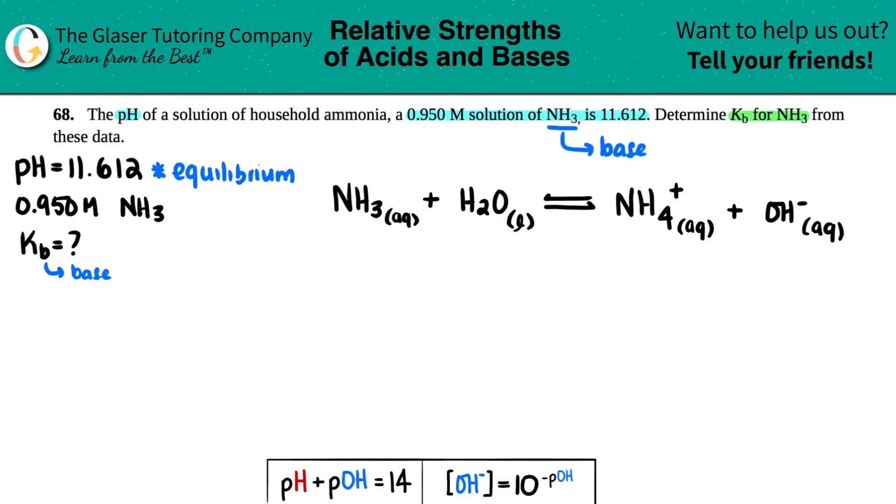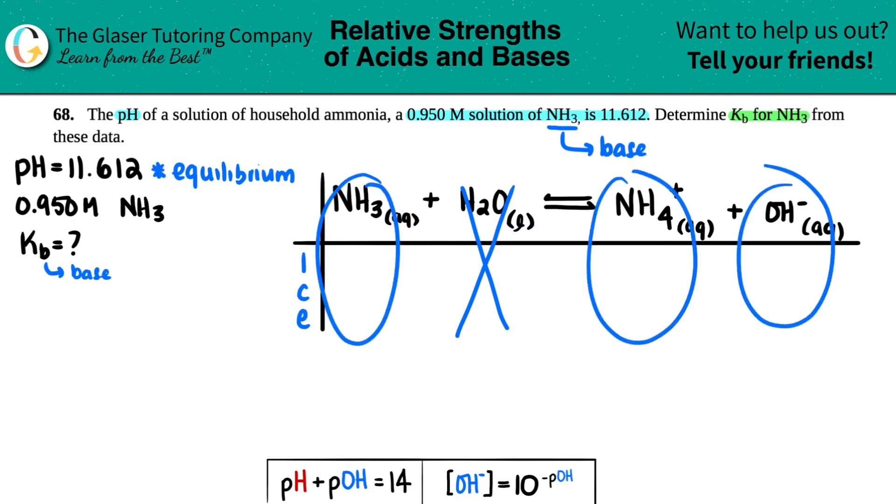Okay, so let's ice table it up. And we're going to do I-C-E. Now, just remember that water, since it's a liquid, it is not used in our KB formula. It's only used for the balanced equation. So as far as the math, I could get rid of this whole column. So we're only basically focusing on these three things over here.